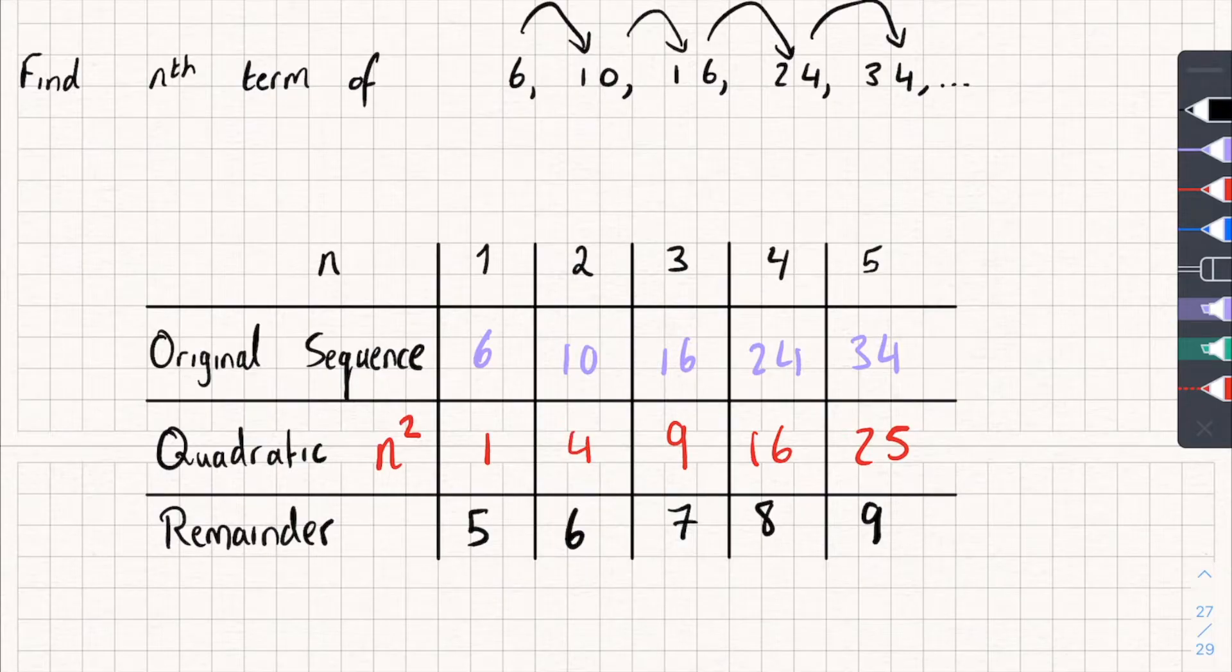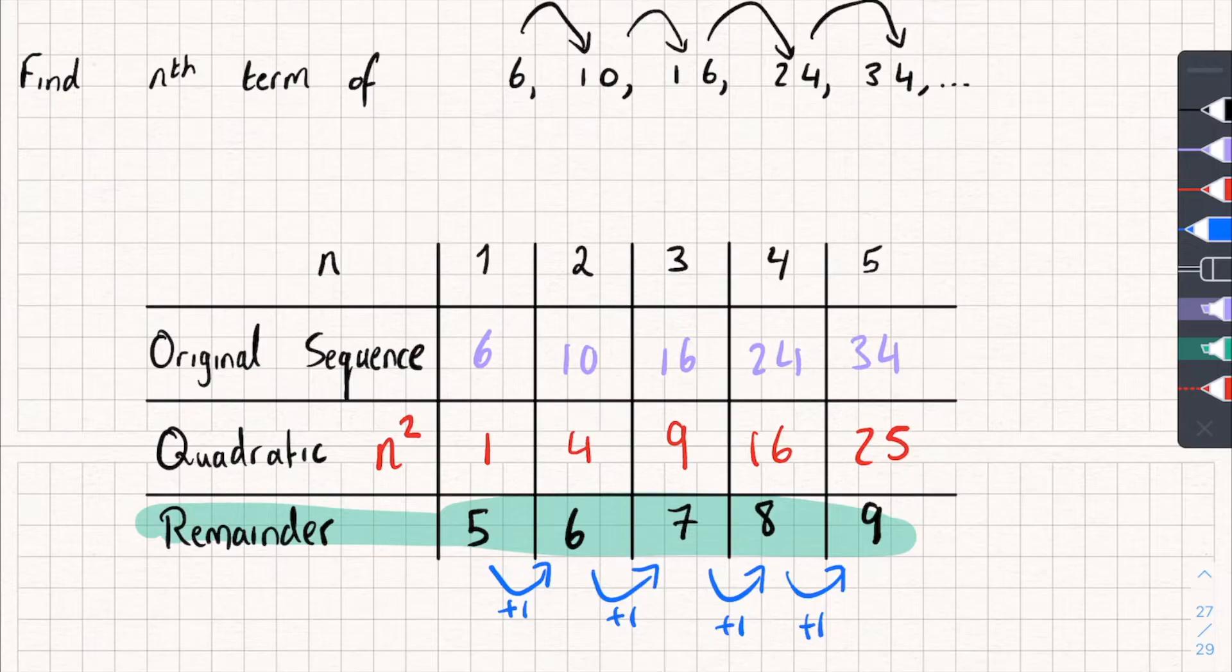So, this is the last part. And you're going to need to know how to find the nth term of a linear sequence for this. I have a video on that if you're unsure. And to do that, we look at our remainder, which I will highlight, our remainder terms. And we find the nth term of these. So, let's do it. We've got 5 to 6, plus 1. 6 to 7, plus 1. 7 to 8, plus 1. 8 to 9, plus 1.